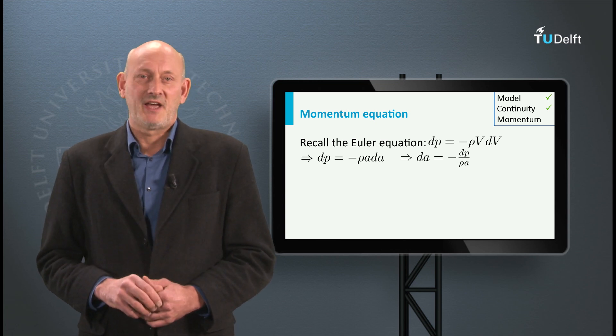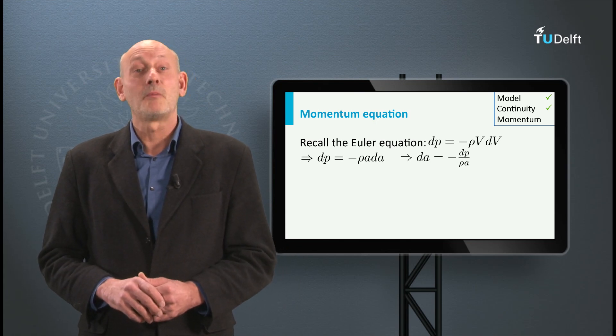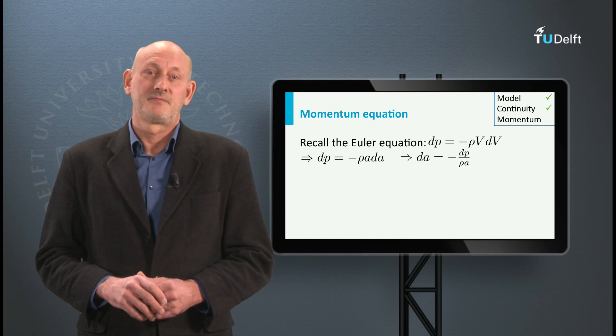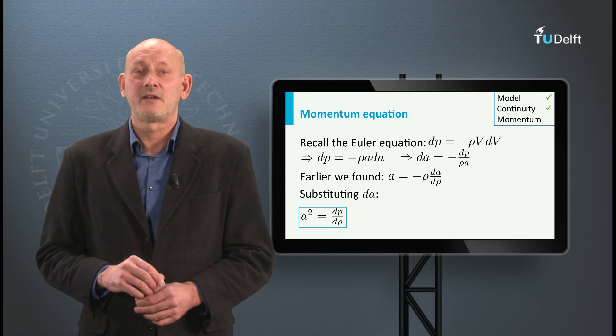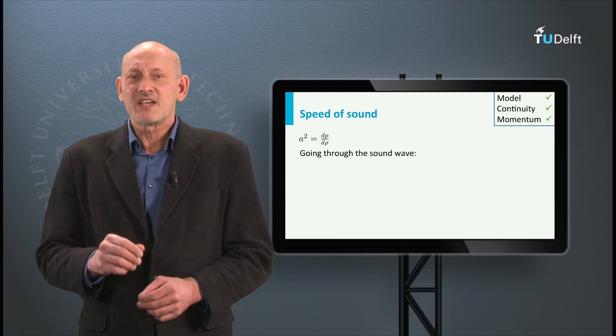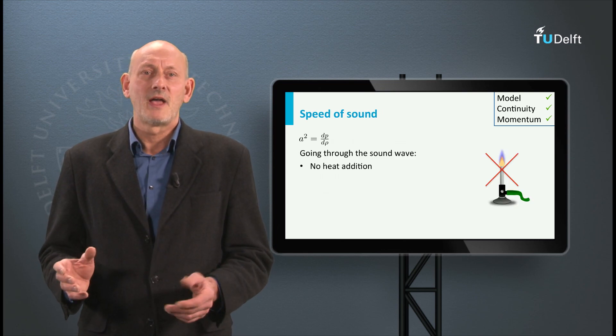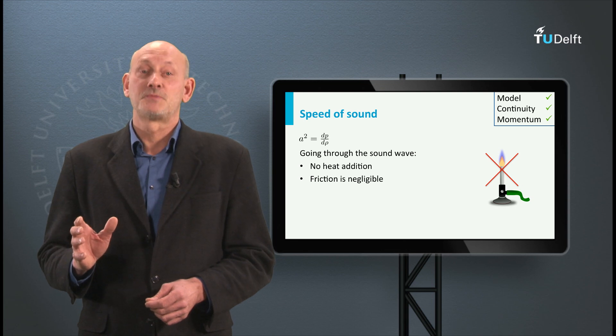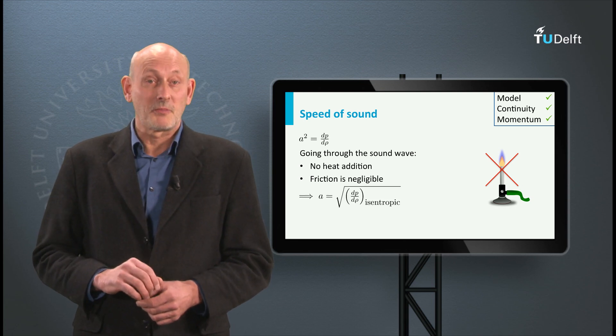We now have an expression for dA that we can substitute in the equation for A we found earlier from applying the continuity equation. This substitution leads to A squared is dP over d rho. When the gas moves through the sound wave there is no heat addition and friction is negligibly small, which basically makes this process isentropic.